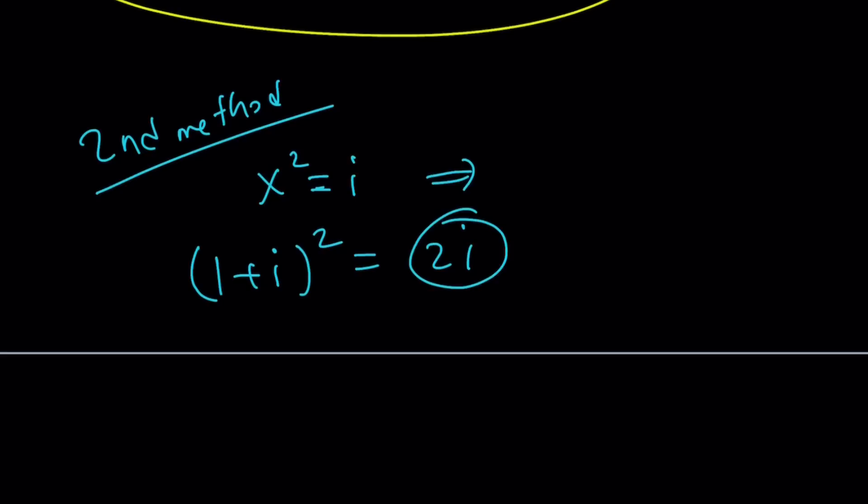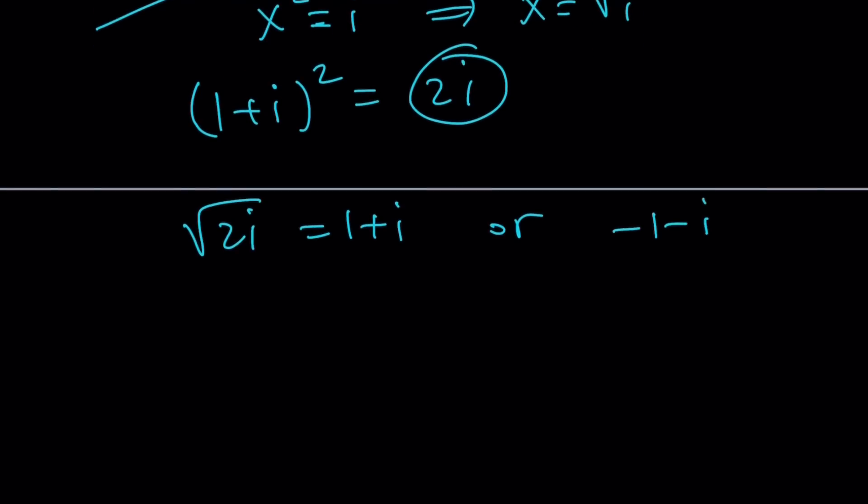So in other words, if you square root 2i, it should be 1 plus i, or the opposite of that, which is negative 1 minus i, right? So this should give you an idea because I'm trying to find the square root of i. So all I have to do is divide both sides by square root of 2, right? Because square root of 2i can be written as square root of 2 times the square root of i. If that's equal to 1 plus i, divide both sides by root 2, and guess what? You got the answer. Isn't that nice?